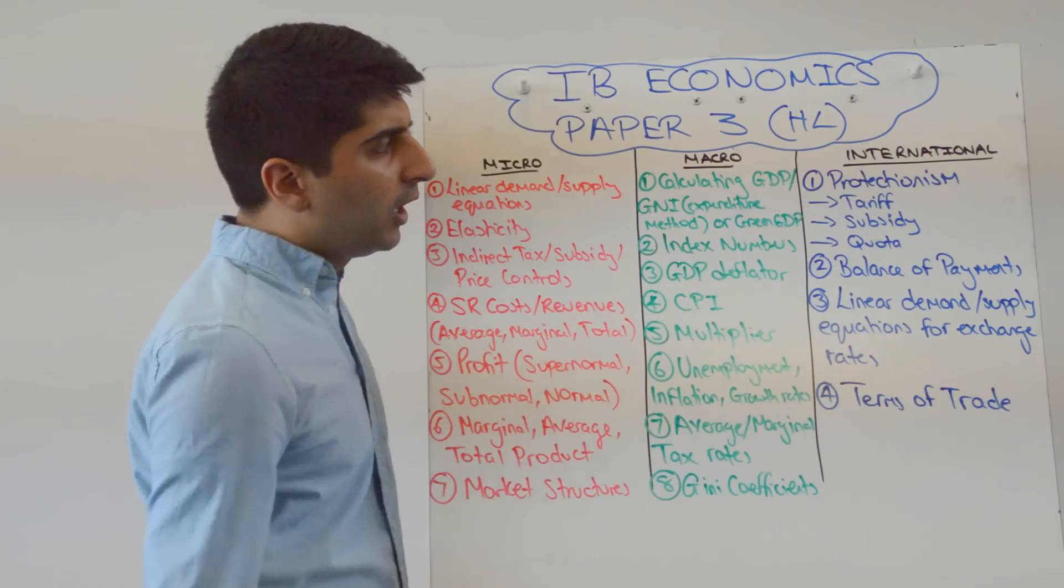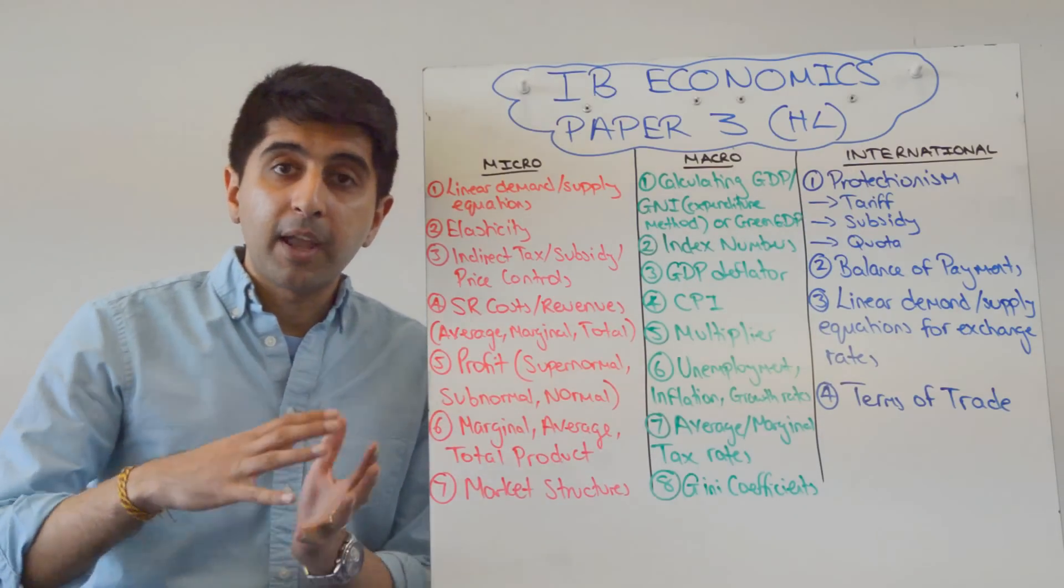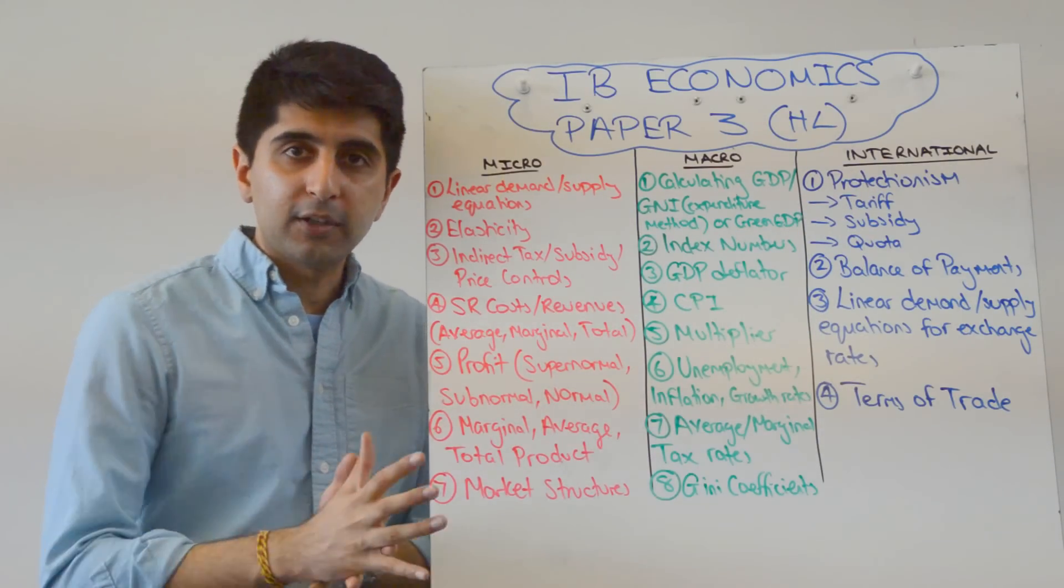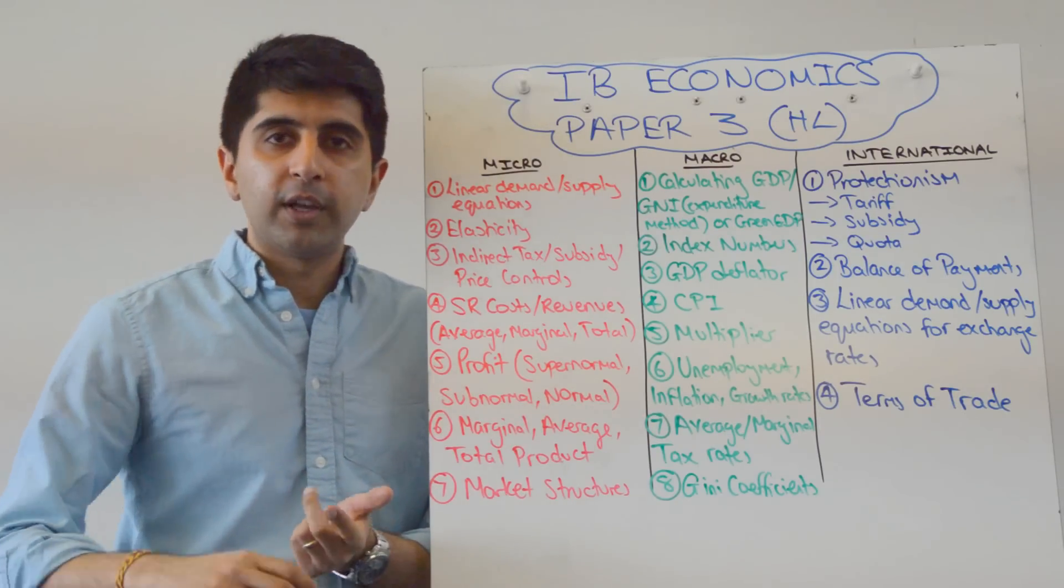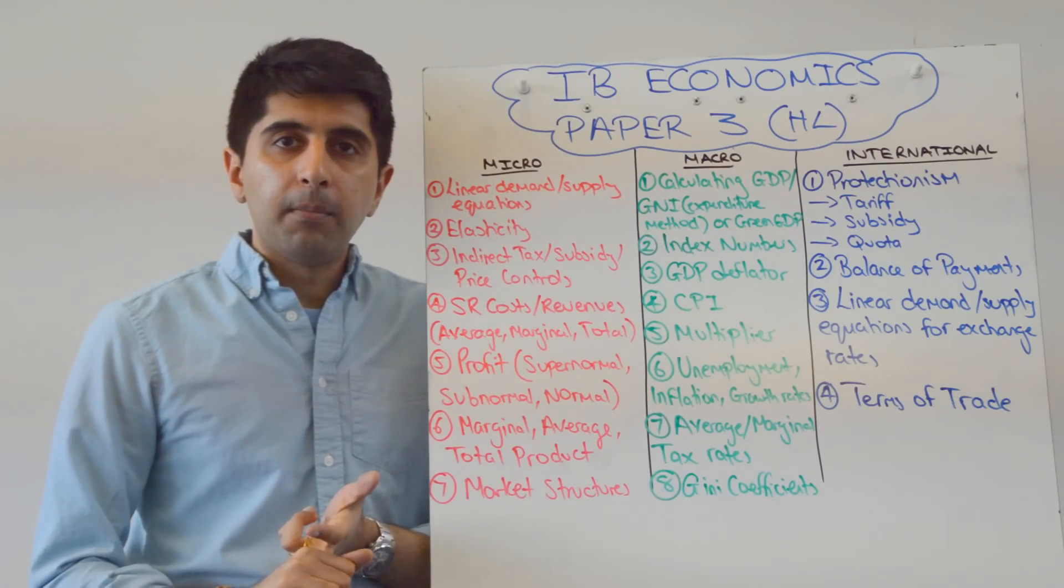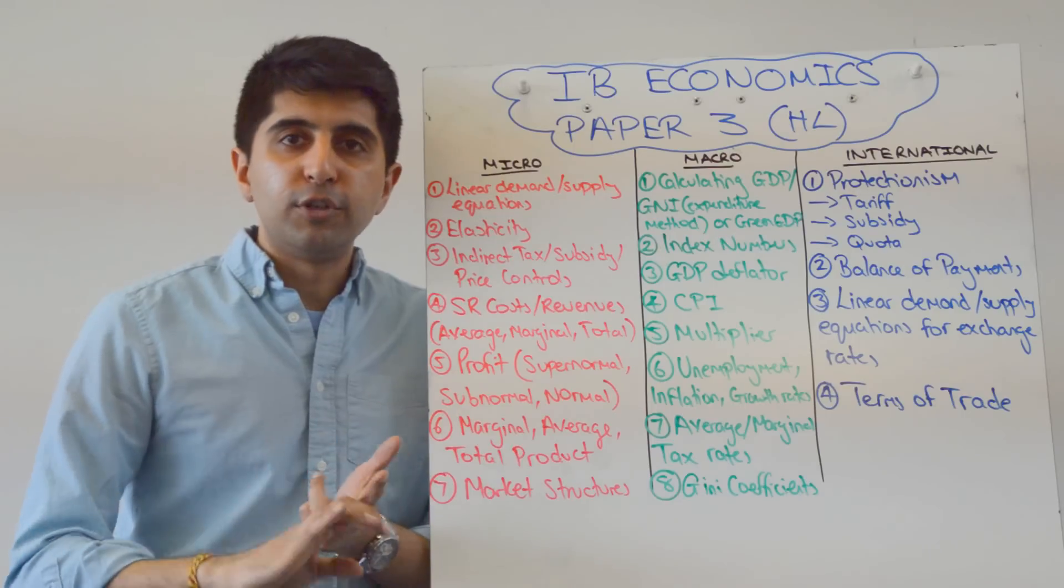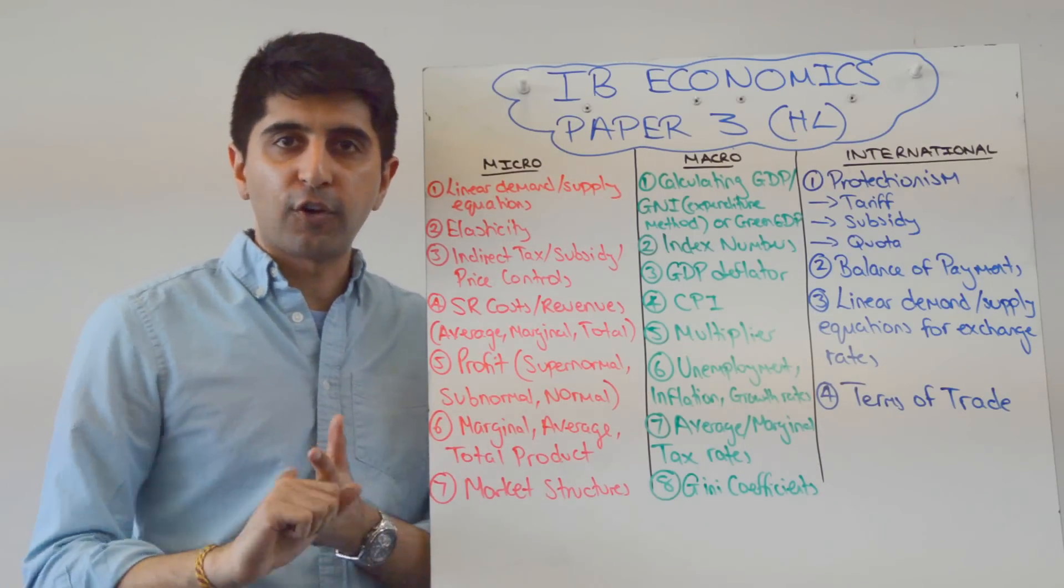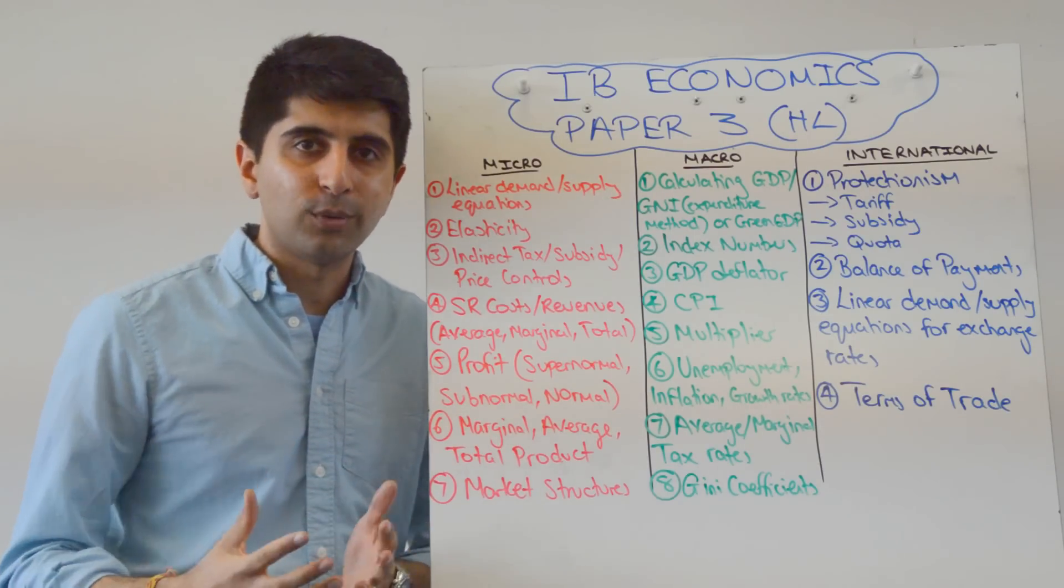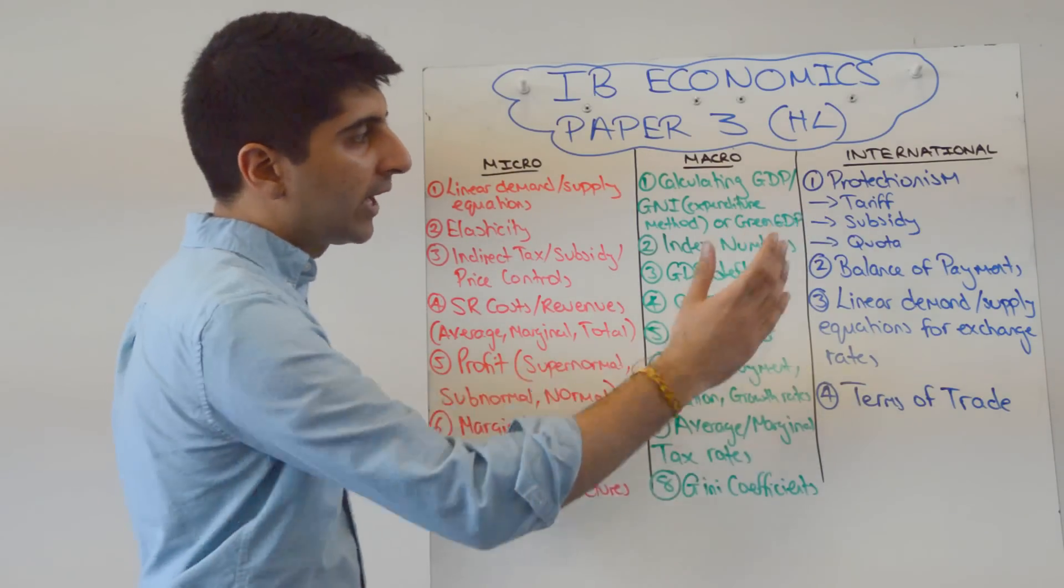For international, your protectionism diagrams. You might have to do calculations with respect to those diagrams. Like for tariff, working out government revenue, working out old producer revenue, new producer revenue. Maybe it's old foreign producer revenue, new foreign producer revenue. Maybe that's what it is. So all these different areas you may need to work out.